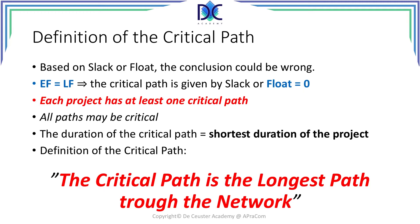On the other hand, imagine that instead of having time till April 15th, we only have time till April 12th. When we calculate back from April 12th, we will have some activities with float equal to zero, but we will also have activities with a negative float. Again, defining the critical path as the sequence of activities where the float is zero would lead us to conclude that we have a critical path, but we would select the wrong critical path.